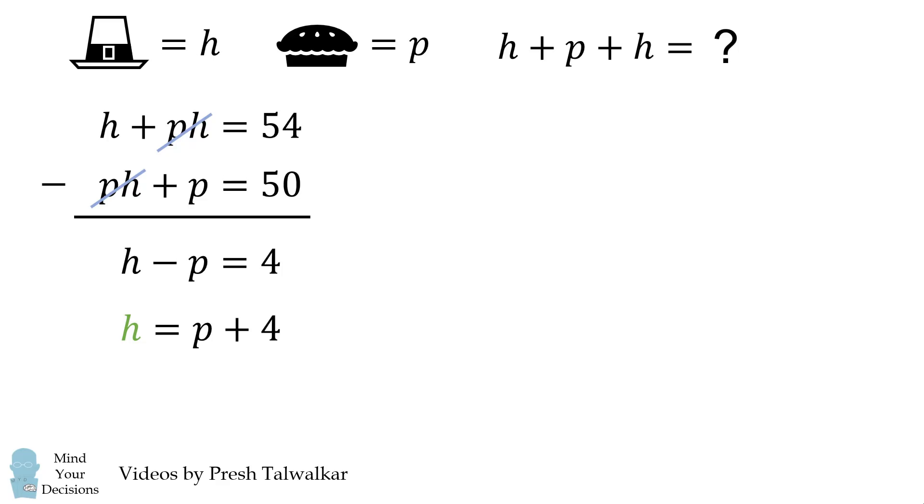We now want to go back to one of these equations. So let's look at the second equation and substitute in for H. So we have P times the quantity P plus 4 plus P is equal to 50.